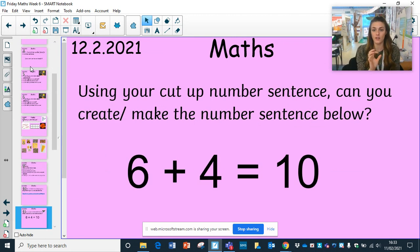So using your cut up number sentence. I've created a document with the number sentence in a grid. You just need to cut that up so you've got lots of different squares and cards, and you need to create this first number sentence for me: six add four is the same as 10.